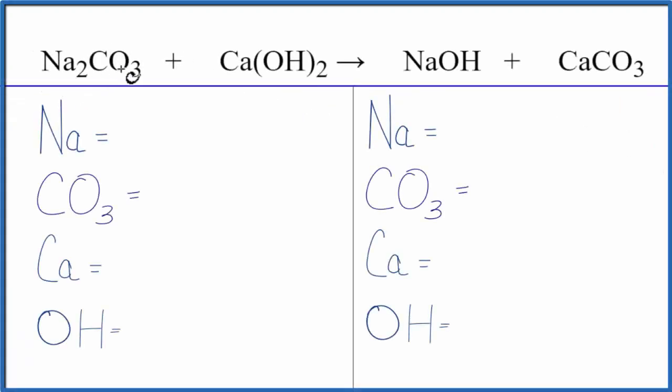To balance this equation, Na2CO3 plus Ca(OH)2, let's add the atoms up on each side of the equation. We have two sodium atoms, and then to make the balancing easier, the CO3, it's called the carbonate ion, it appears here and here.